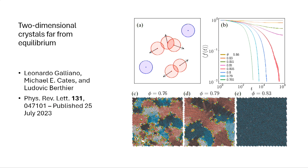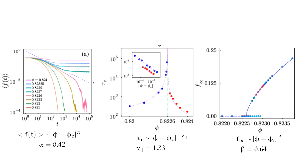People who looked at this around 2020 found a dynamical phase transition. The fraction of active particles goes with an exponent of 0.42. There is a time divergence with exponent 1.33. The steady-state value - how many particles are still active at long time - has an exponent of 0.64. If nothing is moving, it's an absorbing state.